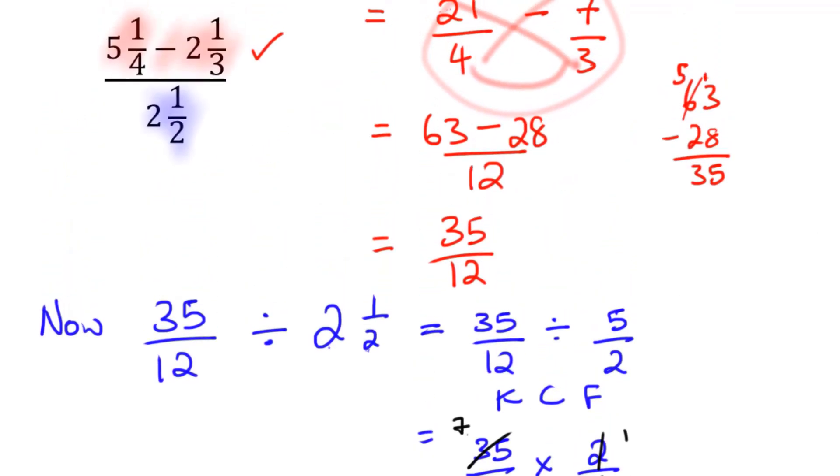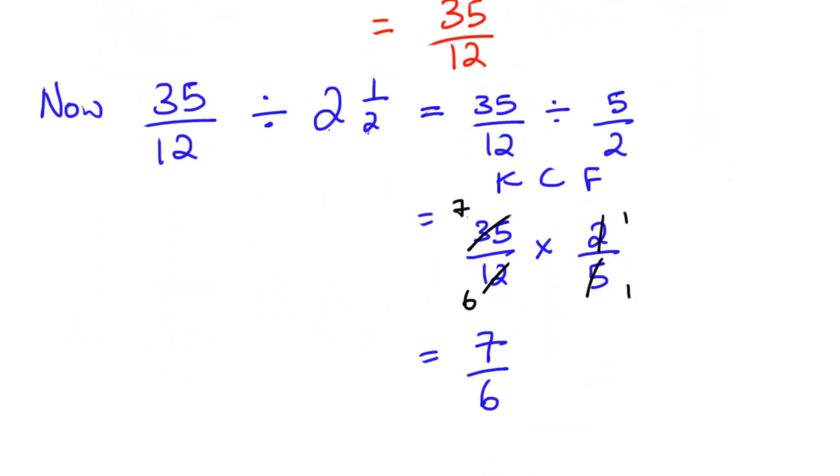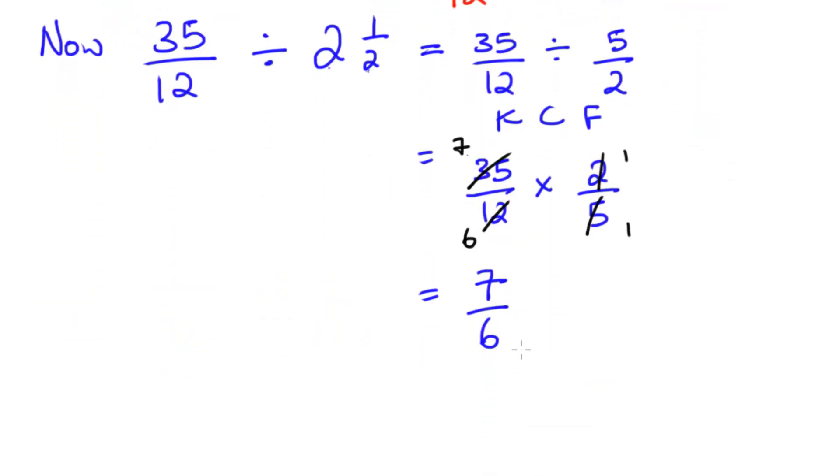That would be my final answer because I divided what I had up here by what I had down here. The only thing I have left to do is to change this to a mixed number. Six into seven goes one time and it has one remainder. So my answer is one and one sixth.